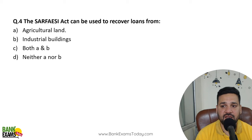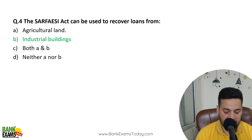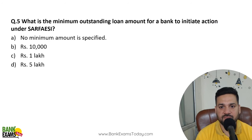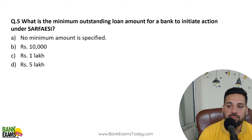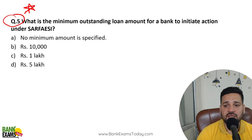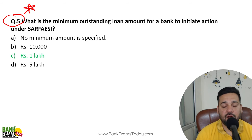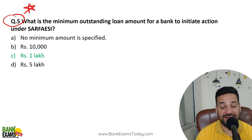The SARFAESI Act can be used to recover loans from industrial buildings — if industrial property is secured, SARFAESI applies. If agricultural land is the security, SARFAESI Act cannot be used there. The minimum outstanding amount — this question has been repeated multiple times — is 1 lakh rupees minimum outstanding amount to initiate action under SARFAESI Act.